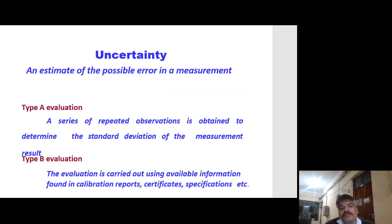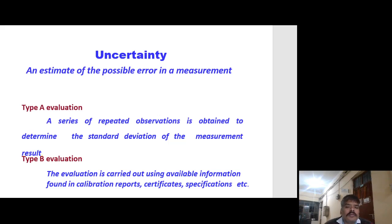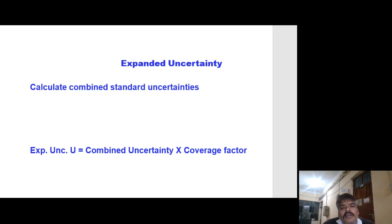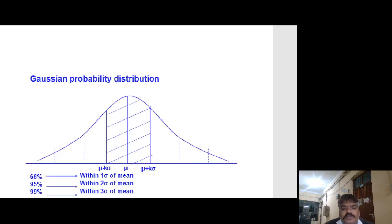Type A evaluation: a series of repeated observations is obtained to determine the standard deviation of the measurement result. Type B evaluation: the evaluation is carried out using available information found in calibration reports, certificates, specifications, etc. Expanded uncertainty is calculated as combined standard uncertainty multiplied by a coverage factor. For a Gaussian probability distribution: 68% of results lie within one sigma of the mean, 95% within two sigma, and 99% within three sigma.